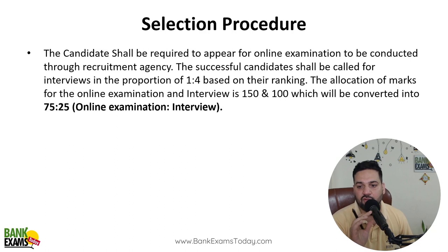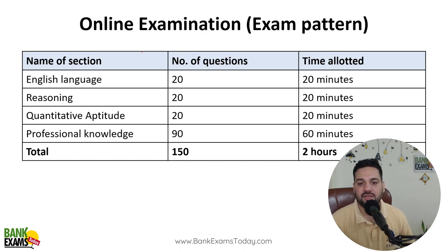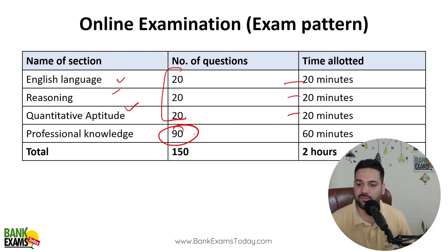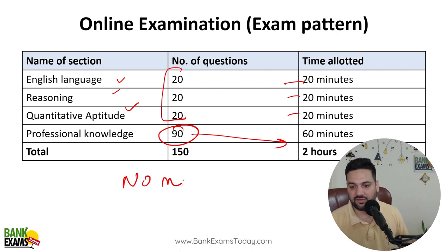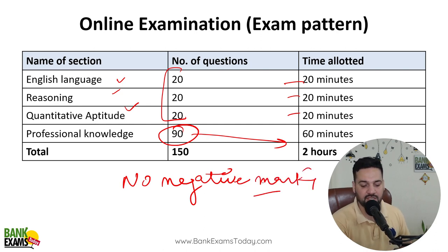The weightage of the written exam is 3 and the weightage of the interview is 1 — that's a 75-25 split. In the exam there is English language, reasoning and quantitative aptitude, 20 marks each with sectional timing, and 90 marks of professional knowledge — that has the highest weightage. There is no negative marking, so attempt all the questions.